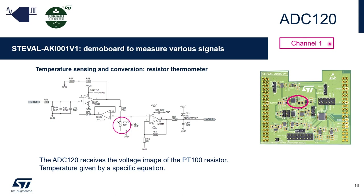On channel 1, there is another temperature sensor based on measuring the resistance of a platinum element. The resistor value varies with the temperature. The signal is conditioned so that the resistor value changes the voltage on the ADC input. For the PT100 used here, it has a resistance of 100 Ohm at 0 degrees Celsius, and the relation between resistor value and temperature is given by a specific equation.